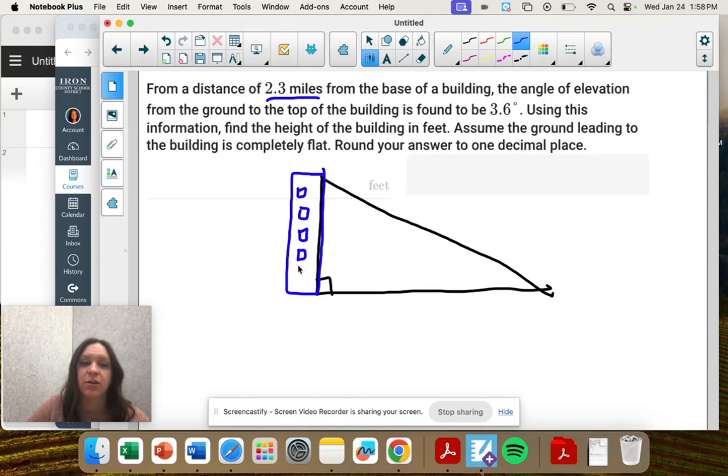There's some windows, some doors. Okay. So that means 2.3 miles is the distance. The angle of elevation is 3.6 and that's 2.3 miles away.